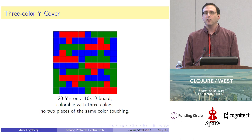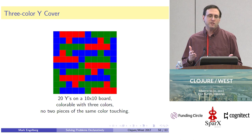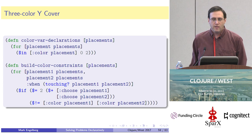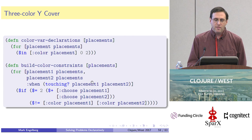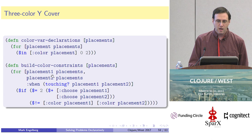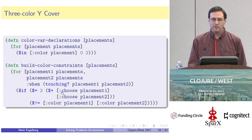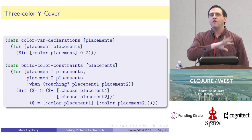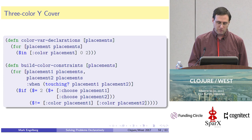You may remember from math class the four-color map theorem — any map can be colored with four colors such that two touching regions are never the same color. What if we wanted to see if there's a Y-Cover that can be colored with exactly three colors? I created a new set of variables — keyword color subscripted by placement — ranging from zero to two (zero being red, one green, two blue). For every combination of placements that are touching, I created a constraint saying if both placements are in our grid, their colors have to be not equal. Adding this in with the other Y-covering constraints and passing to Loco gives back the three-color solution shown.